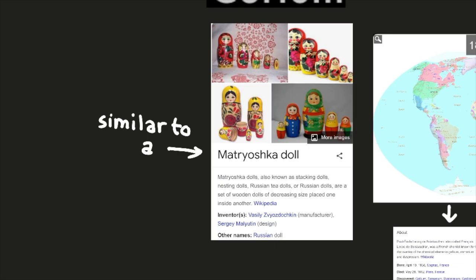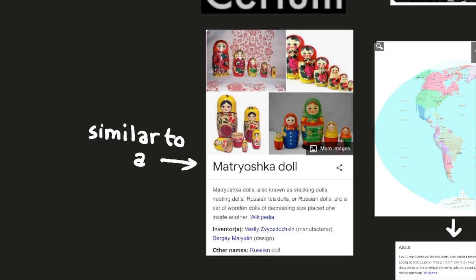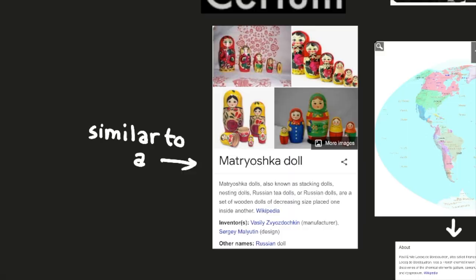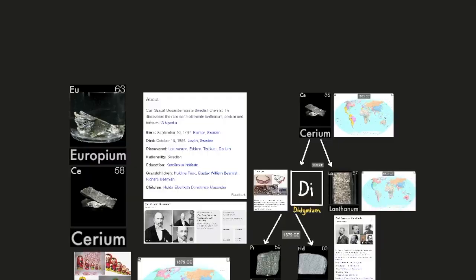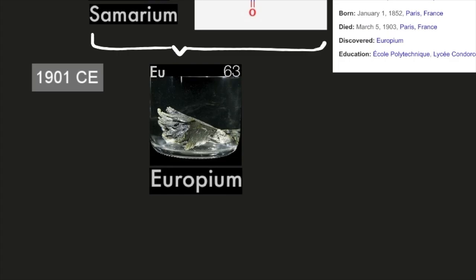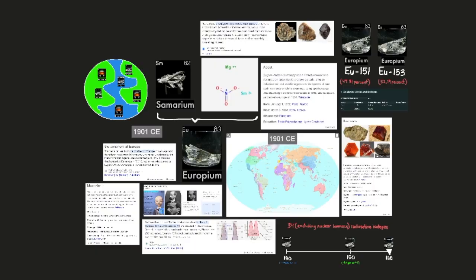Essentially, these elements were all discovered as if it were from a Matryoshka doll, also known as the stacking dolls, the nesting dolls, Russian tea dolls, or Russian dolls. They are a set of wooden dolls of decreasing size placed one inside another, according to Wikipedia. It started with cerium and then ended with europium.